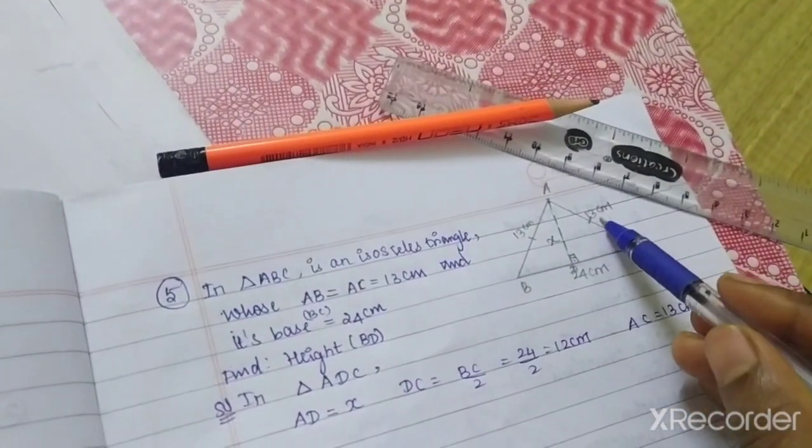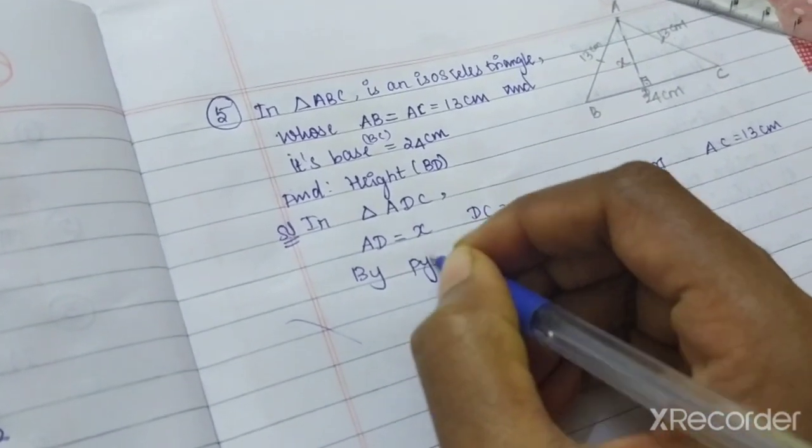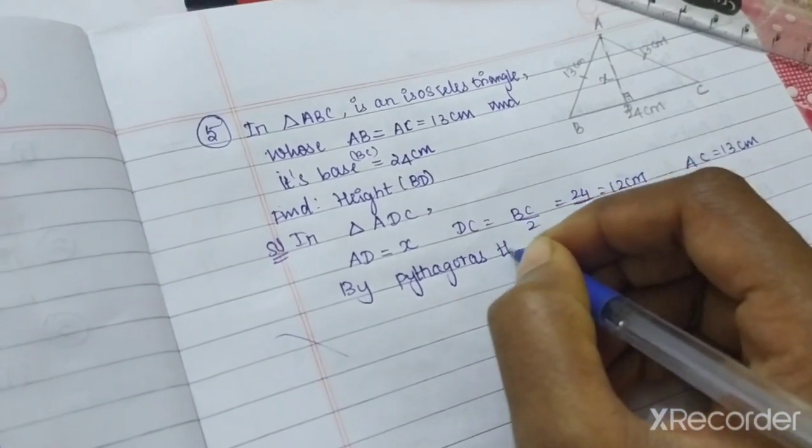90 degree opposite of hypotenuse, so by Pythagorean theorem.